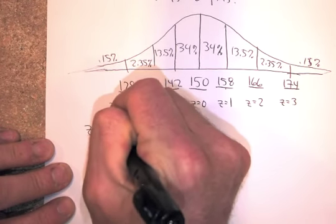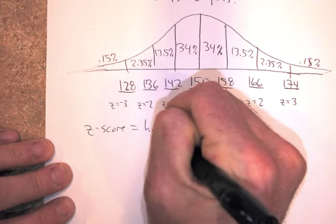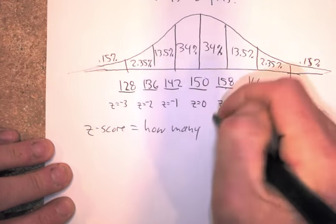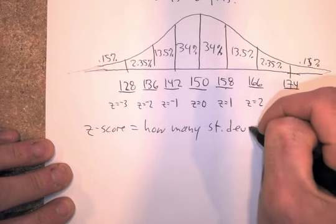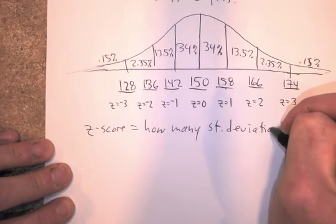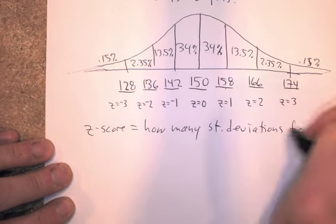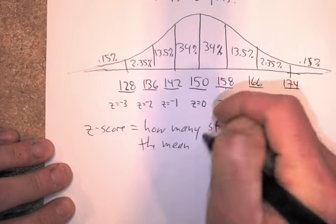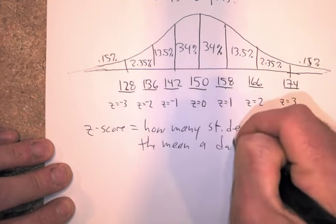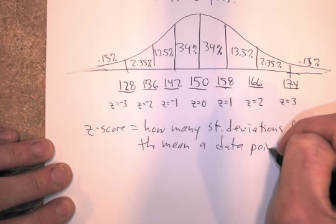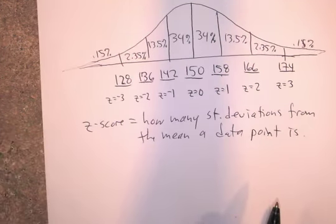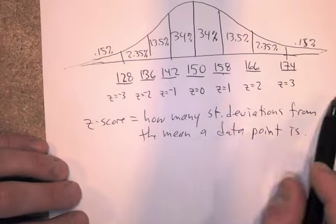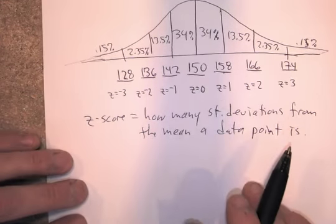So z-score, if you want a definition, equals how many standard deviations from the mean the data point is, okay? How many standard deviations are you from the mean? If you're positive z-score, you're above the mean. Negative z-score, you're below.